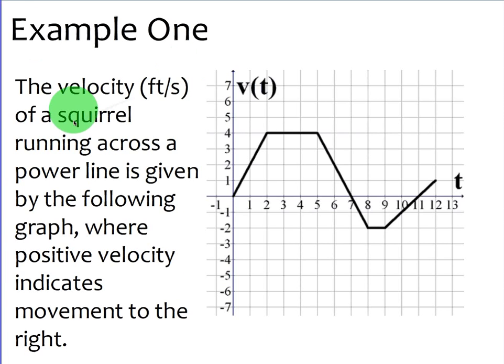Let's look at this example. This is the same example we've looked at before, but we are going to find total distance traveled this time. It says the velocity in feet per second of a squirrel running across a power line is given by the following graph, where the positive velocity indicates movement to the right. So here's the squirrel. It starts out zero. It's going zero feet per second. Then at one, after one second, it's going two feet per second.